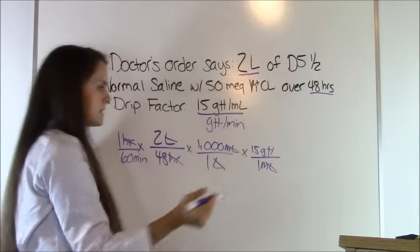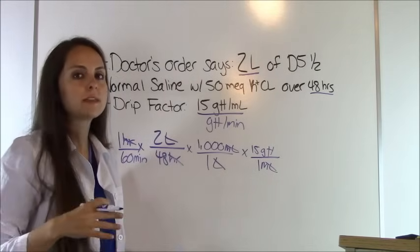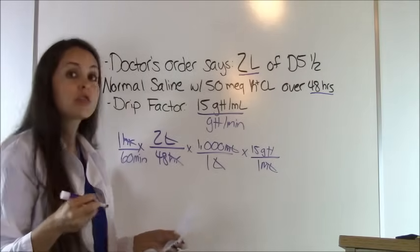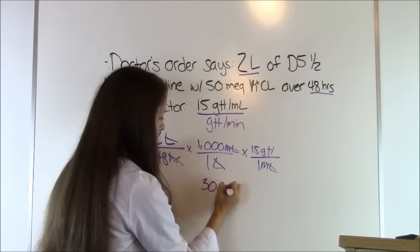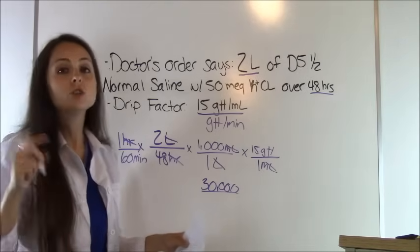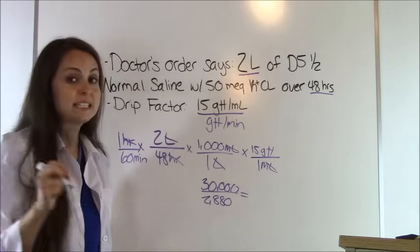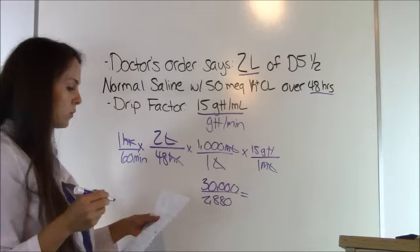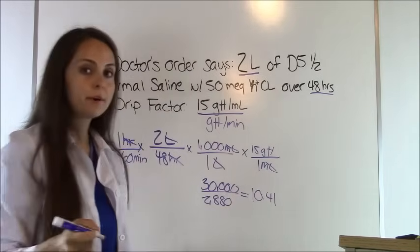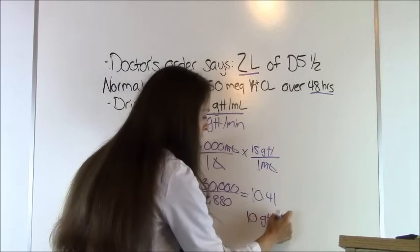Milliliters cancels out and we're in drops per minute. Multiply the top: 1 times 2 times 1,000 times 15 equals 30,000. Multiply the bottom: 60 times 48 times 1 times 1 equals 2,880. 30,000 divided by 2,880 equals 10.41, which rounds to the nearest whole number — so the answer is 10 drops per minute.